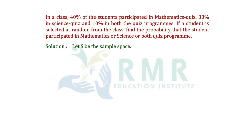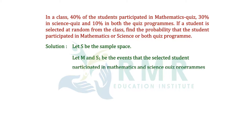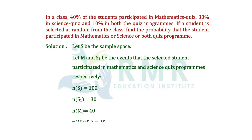Solution. Let S be the sample space. Let M and S1 be the events that the selected student participated in math and science quiz programs respectively. N of S equal to 100, N of S1 equal to 30, N of M equal to 40, and N of M intersection S1 equal to 10.